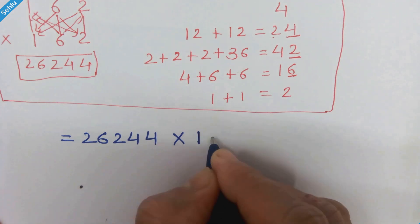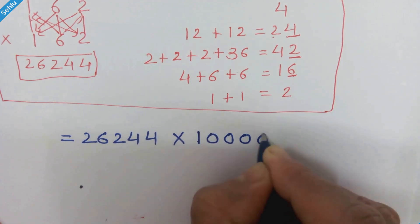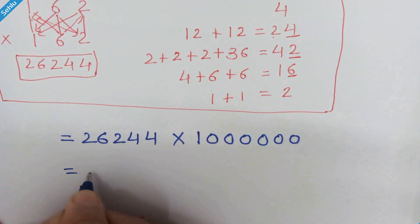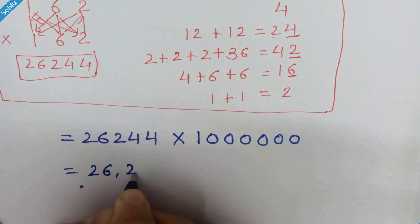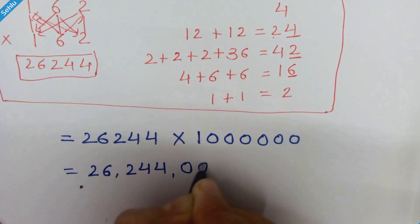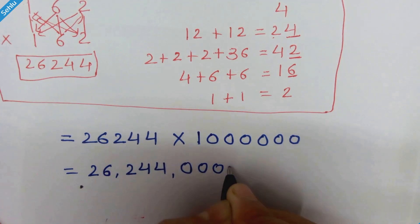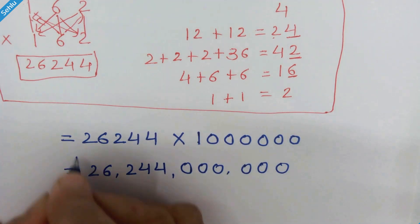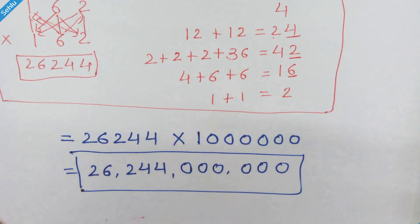So we can write 26244 times 10 raise to 6. Now 10 raise to 6 is 1 million, so we can write 1,000,000. This equals 26 billion 244 million — and that's the answer. Thanks for watching, we will meet in the next video, bye.